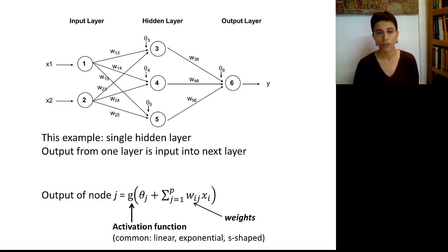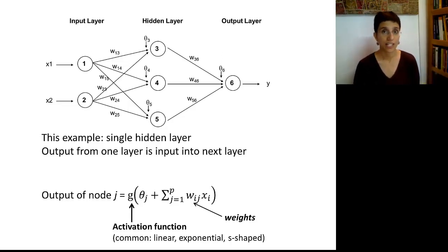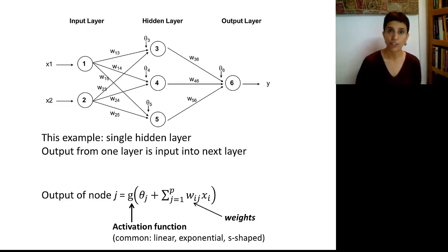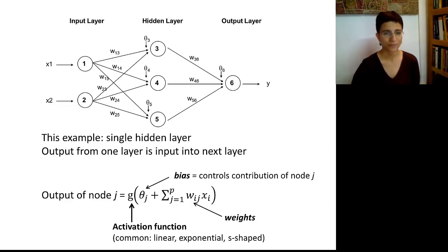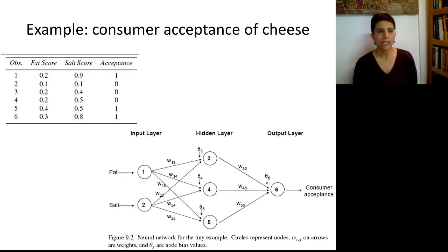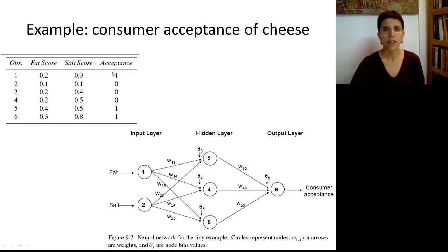The most typical activation functions used in neural nets are: linear, which means taking a linear function of the inputs; exponential, that's the exponential activation function; and very commonly, S-shaped functions. You've already encountered an S-shaped function — in logistic regression we encountered the logit function, which is an S-shaped function. The thetas are also parameters in the neural net, but they have a different name: they're called the bias, and they control the contribution of each node to the entire model.